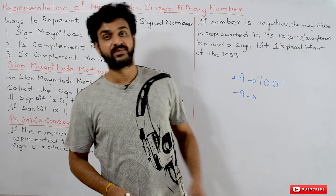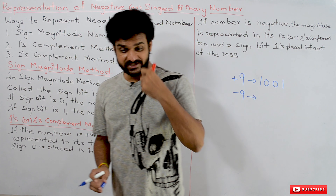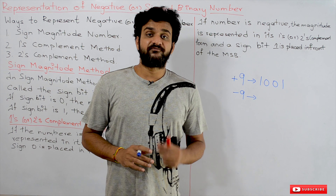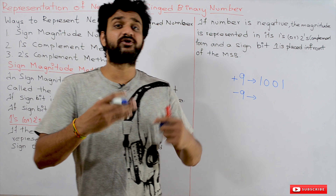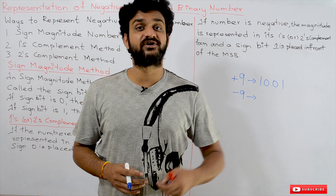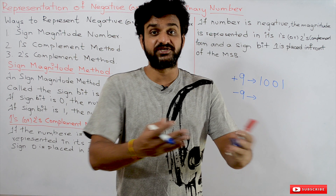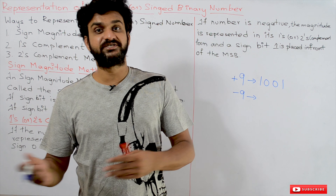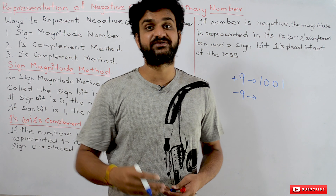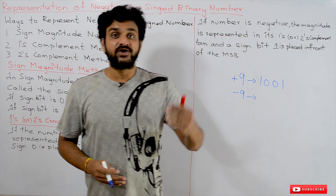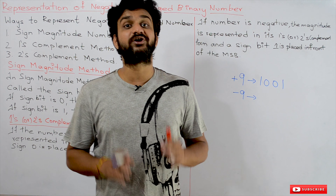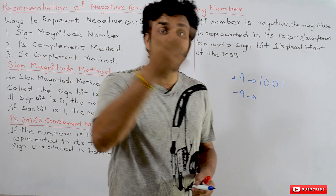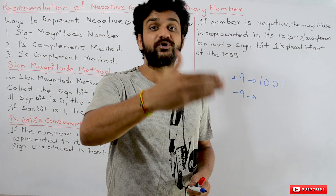Before going into the discussion about how to represent negative numbers, we will try to understand the components of the computer. For example, if you want to buy a computer, in the shop you will ask for a processor of 64-bit or 32-bit, and RAM of 8 GB or 16 GB. So what do those specifications mean? If you ask for a 64-bit processor, it means the data unit that needs to be stored or processed will be of size 64 bits.